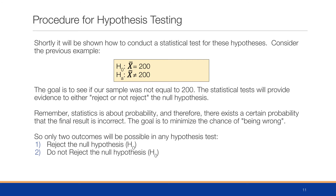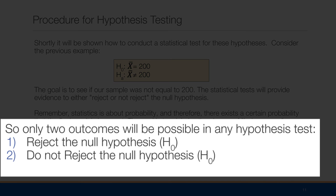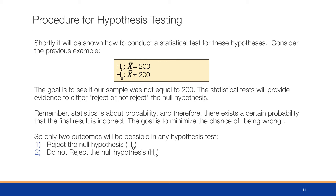We will soon show how to conduct the statistical test for these hypotheses. Consider the first example where H₀: x̄ = 200 and Hₐ: x̄ ≠ 200. The goal is to see if our sample was not equal to 200. The statistical tests will provide evidence to either reject or not reject the null hypothesis. Because statistics is about probability, there exists a certain probability that the final result is incorrect. Only two outcomes are possible: we either reject or do not reject the null hypothesis. Notice we have not accepted anything, nor done anything directly with the alternative hypothesis.